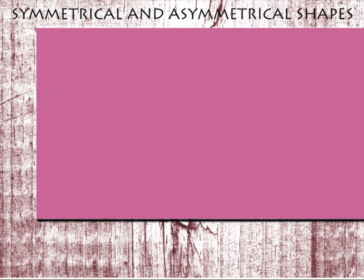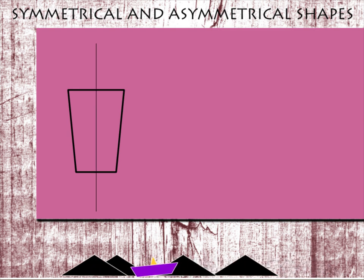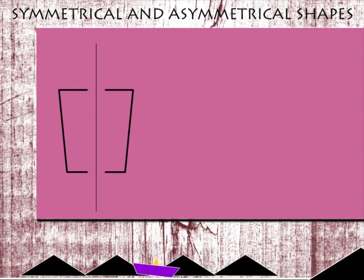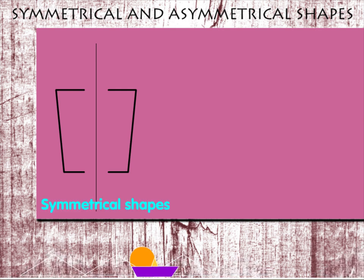Symmetrical and asymmetrical shapes. Shapes that can be divided into at least two equal halves that are mirror images of each other are called symmetrical shapes.